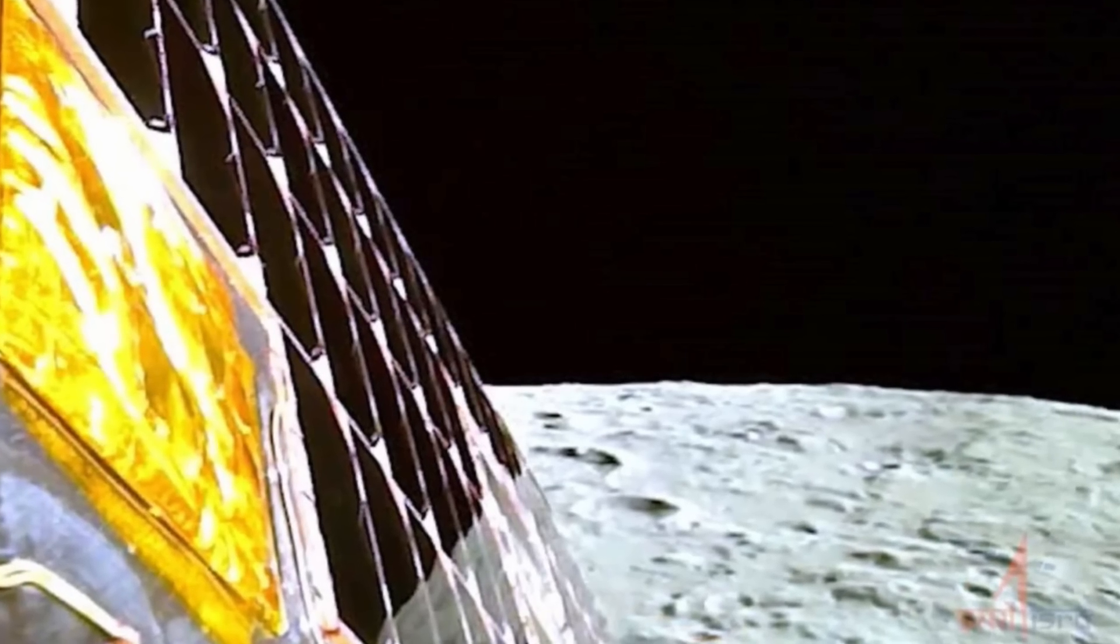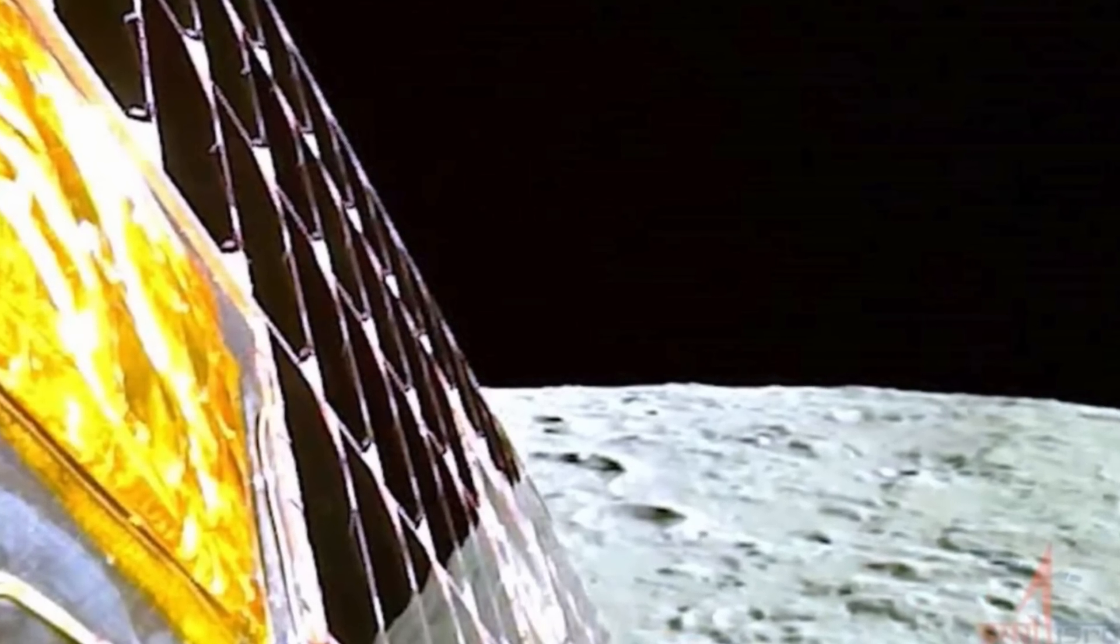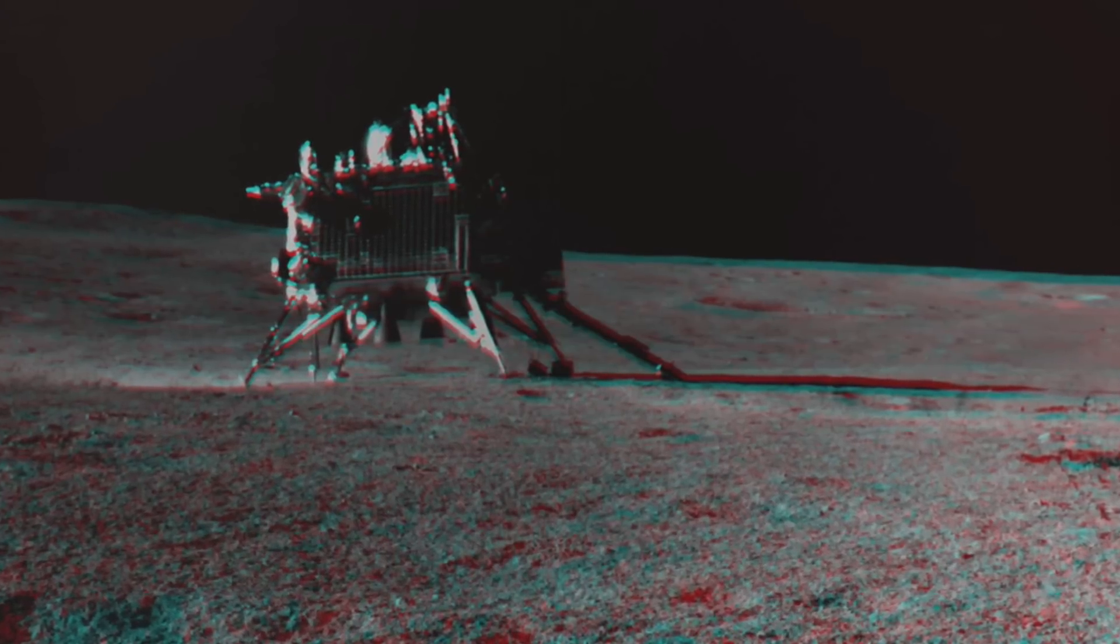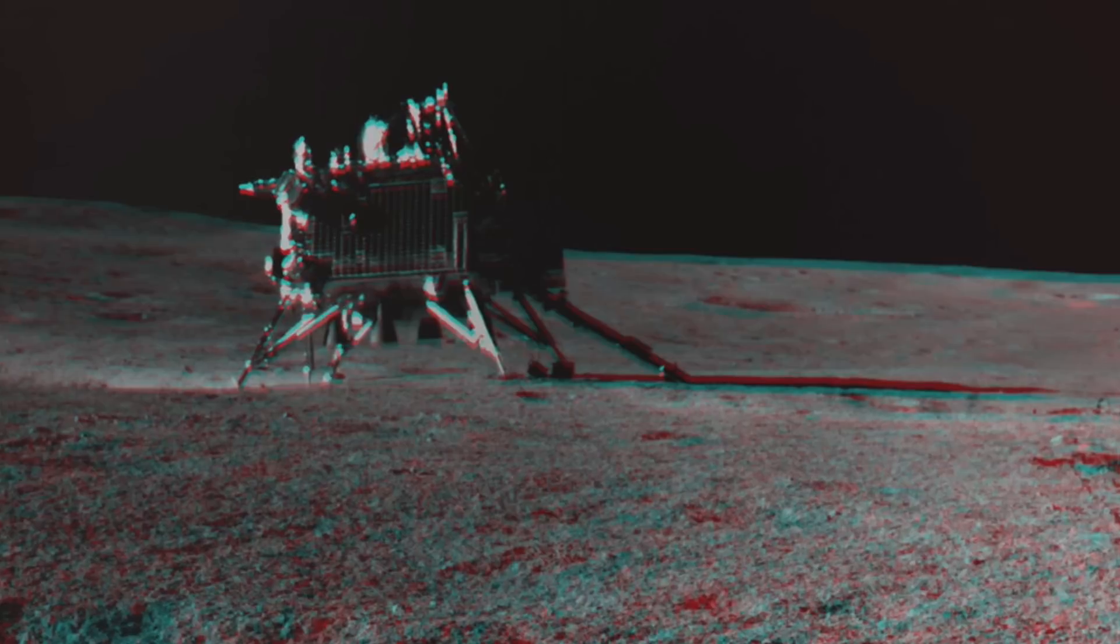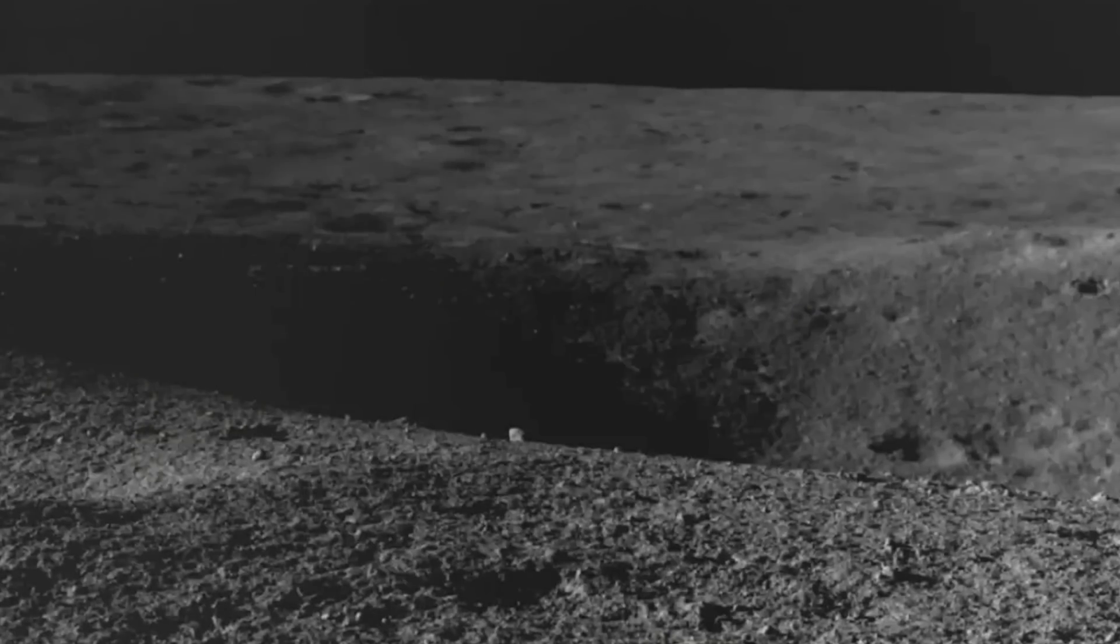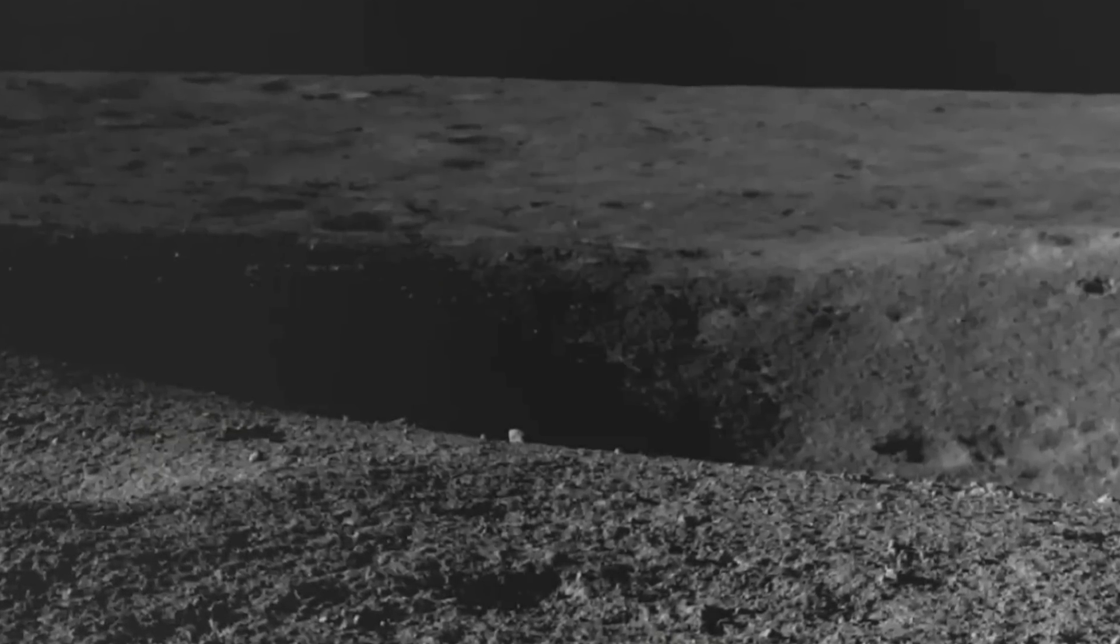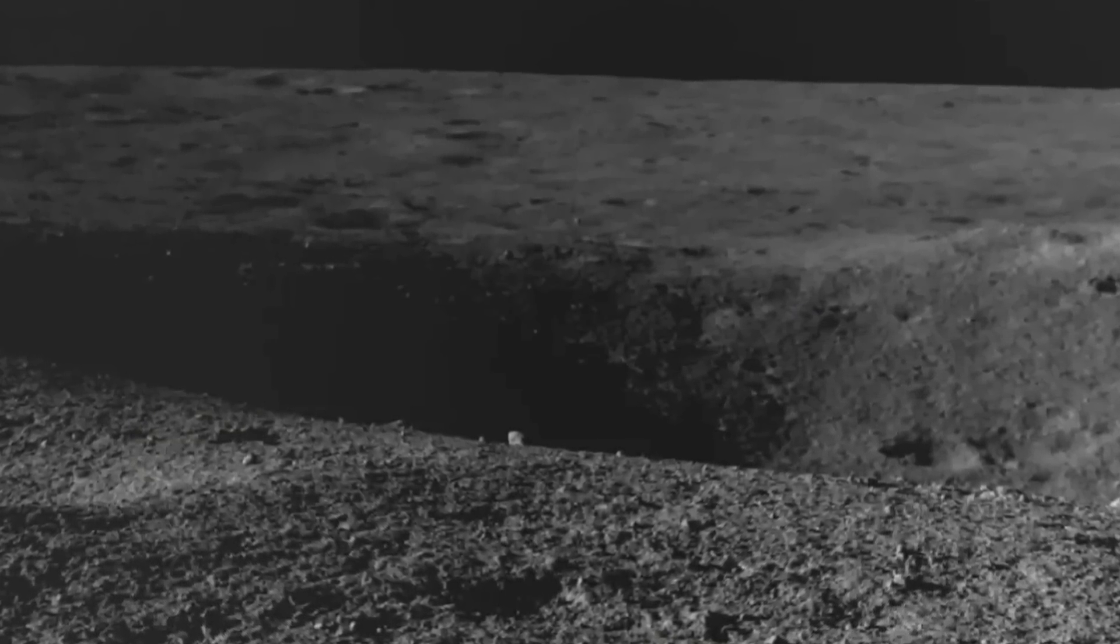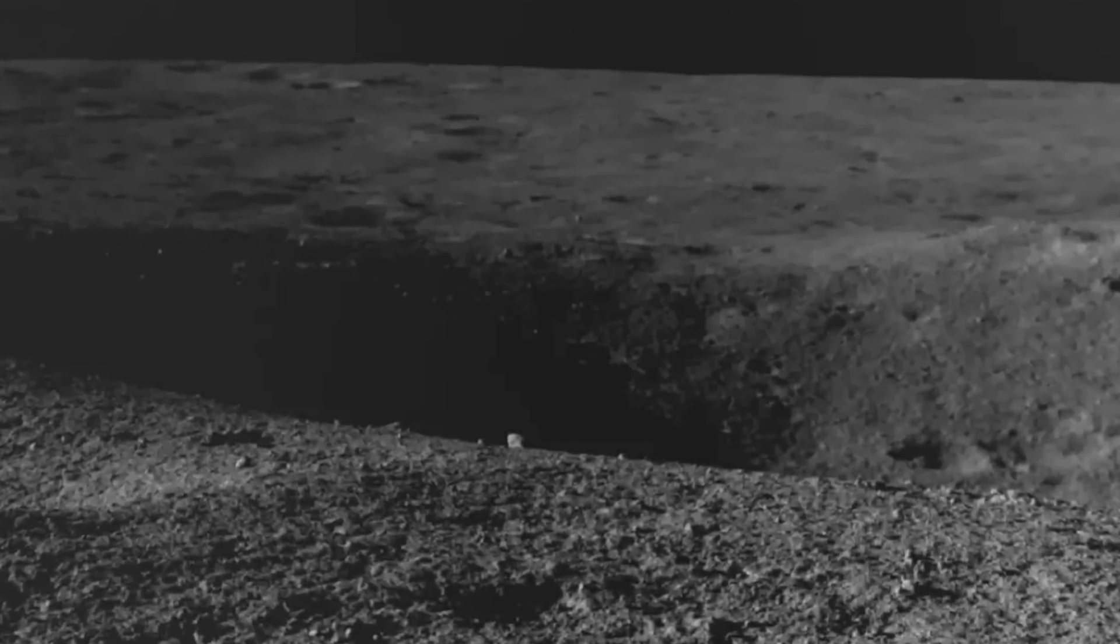Currently, both the lander and rover are in a state of dormancy. This is due to the fact that it is currently night time in the specific location on the Moon where they are stationed, and lunar nights can endure for approximately 14 days. Vikram and Pragyan, similar to previous lunar missions, rely on solar power as their primary source of energy. This implies that during the night, when their batteries cannot recharge, they enter a state of dormancy. Vikram and Pragyan are scheduled to awaken on 22 September to resume their expedition.